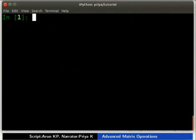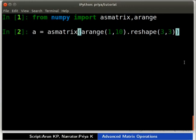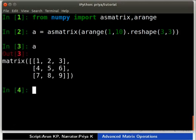Now, let us see how to create arrays. Type from NumPy import AsMatrix, Arrange. A3 is equal to AsMatrix Arrange inside brackets 1,10 dot Reshape inside brackets 3,3. Then type A. Now, type A dot Flatten open and close brackets.